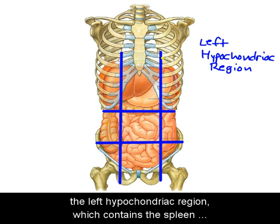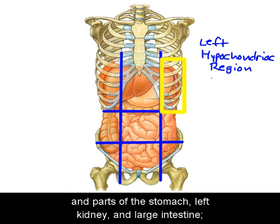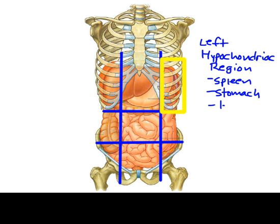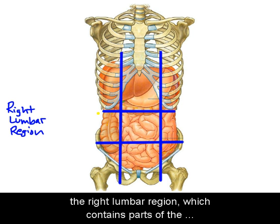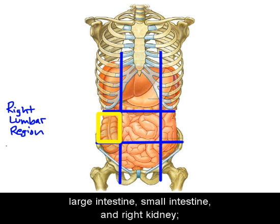The left hypochondriac region contains the spleen, part of the stomach, the left kidney, and the large intestine. The right lumbar region contains parts of the large intestine, small intestine, and right kidney.